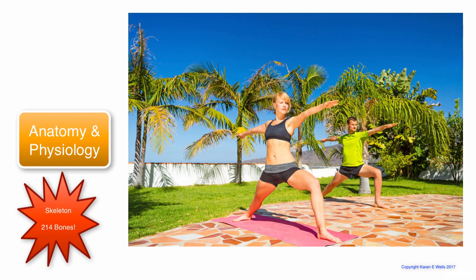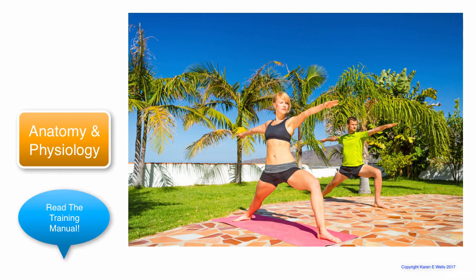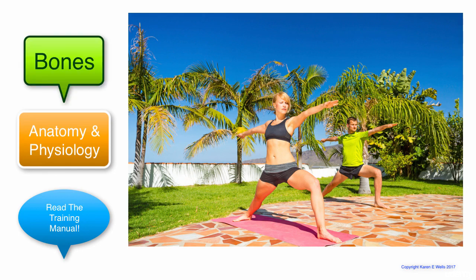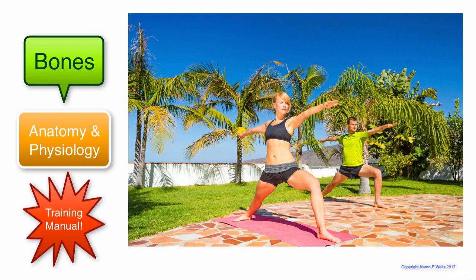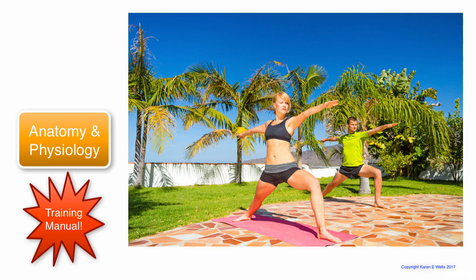Within this training module number two, we're looking at various parts of the skeleton, so make sure that you're reading through all of that. We're looking at the bones in the face, the cranium, the vertebrae, the ribs, the wrist, the hands, the legs, the feet, the joints, and the skeletal muscles. All of this information is included within module two of the training manual. It's really important for you to read through this and get a thorough understanding of the anatomy and physiology that's going to affect either yourself or your students when doing yoga.